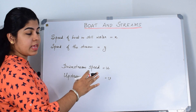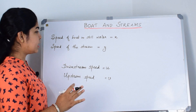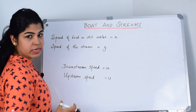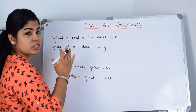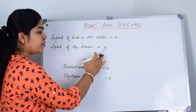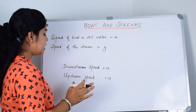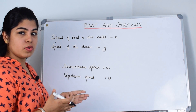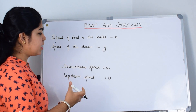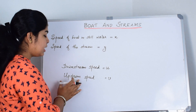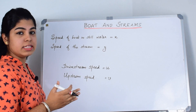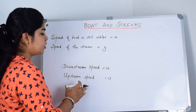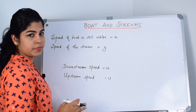The basic four terms are: first, the speed of the boat in still water, which we usually represent by X; then the speed of the stream, represented by Y; then the downstream speed U, which is the speed of the boat when it goes along with the direction of the stream; and the upstream speed V, which is the speed of the boat when it goes opposite to the direction of the stream.